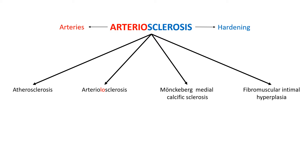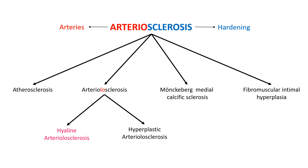There are two different types of arteriolosclerosis: hyaline arteriolosclerosis and hyperplastic arteriolosclerosis. In this video, I will be talking about hyaline arteriolosclerosis.